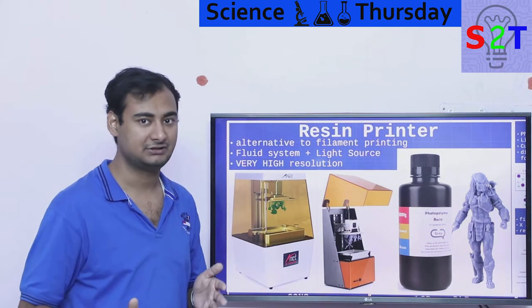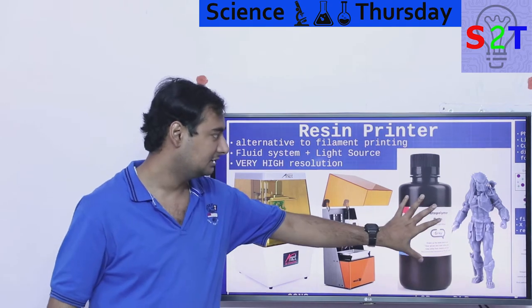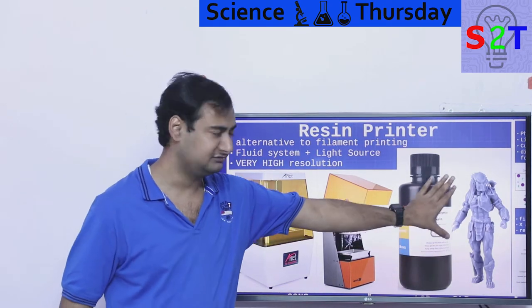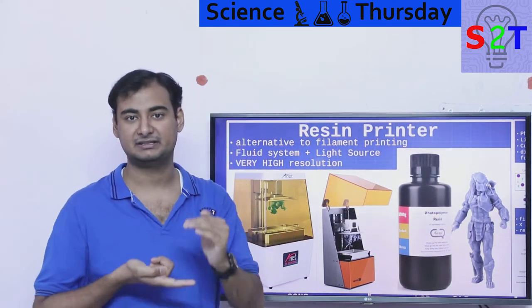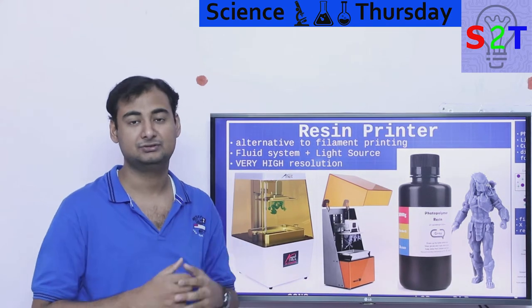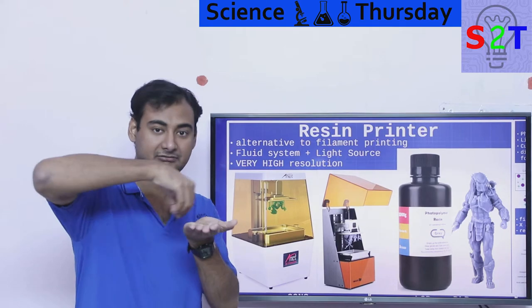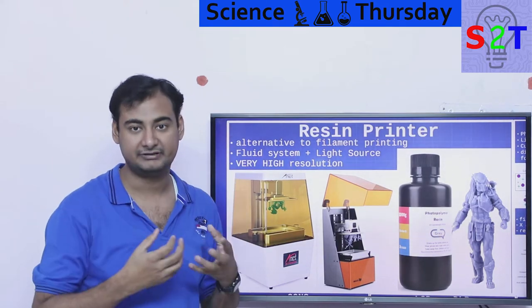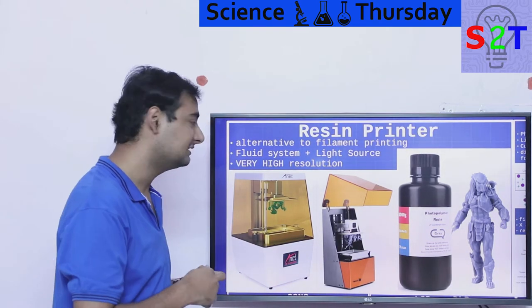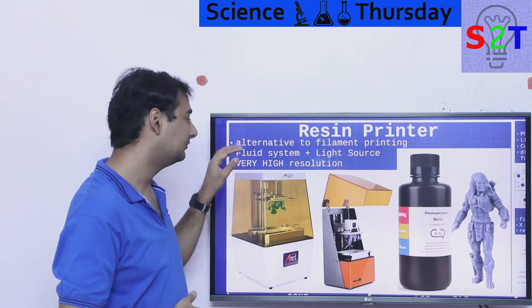But if you're making something small, let's say like a small miniature model, I'm talking like a few centimeters high, it does not have the resolution. Simply because the way it works, it does not allow it for very small parts. Basically it does not have the resolution so people go for this fluid system and a light source.